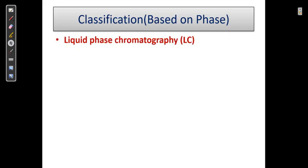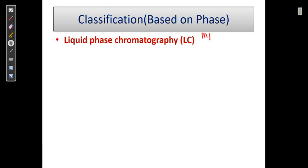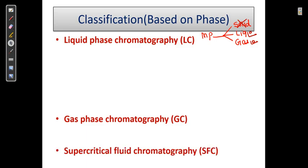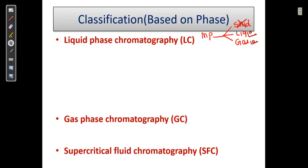The first classification is based on mobile phase. As we know, the mobile phase is basically made up of three states: solid, liquid, and gas. The mobile phase can never be a solid — it can be a liquid or a gas. So the first is liquid phase chromatography, the second is gas chromatography, and the third is supercritical fluid chromatography.